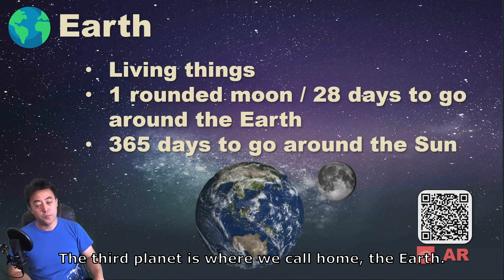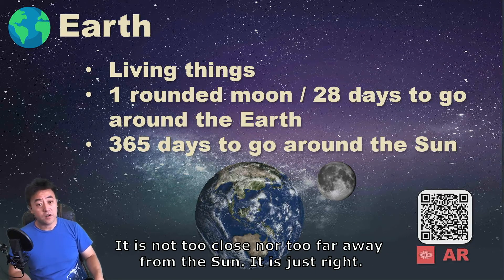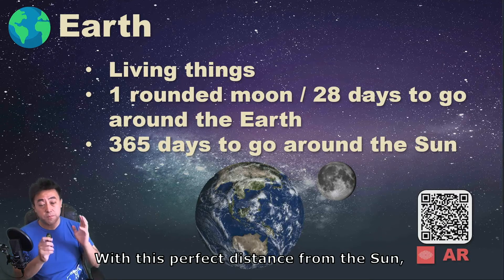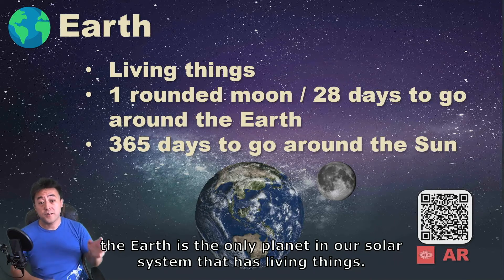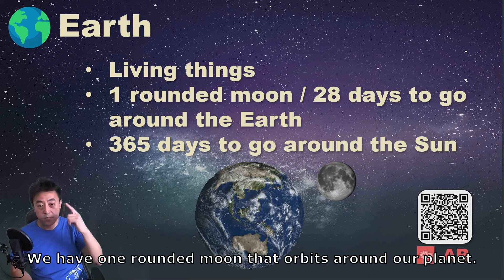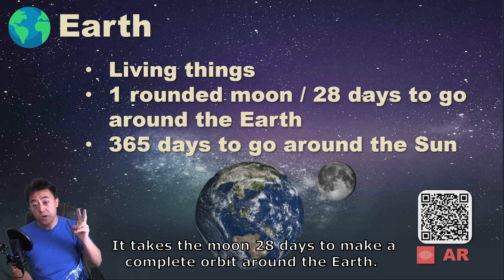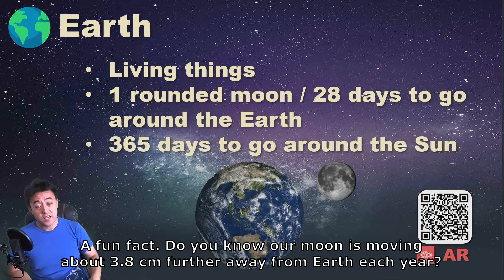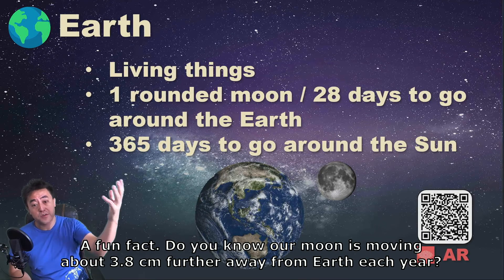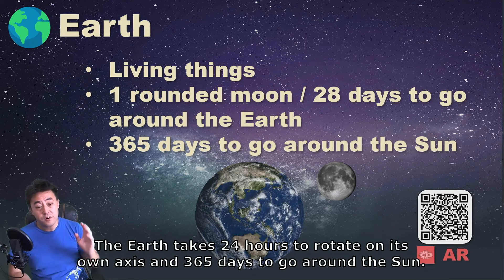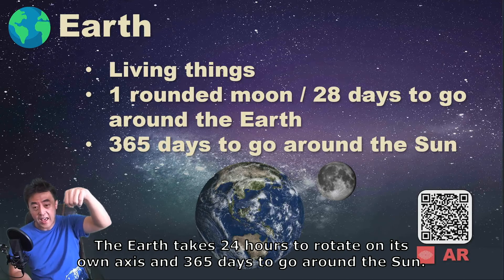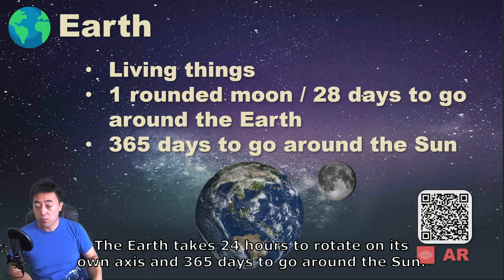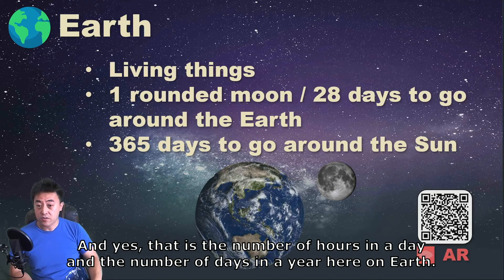The third planet is where we call home: the Earth. It's not too close nor too far away from the sun — it's just right. With this perfect distance from the sun, Earth is the only planet in our solar system that has living things. We have one rounded moon that orbits around our planet. It takes the moon 28 days to make a complete orbit around the Earth. Did you know our moon is moving about 3.8 cm further away from Earth each year? The Earth takes 24 hours to rotate on its own axis and 365 days to go around the sun — that's the number of hours in a day and the number of days in a year.